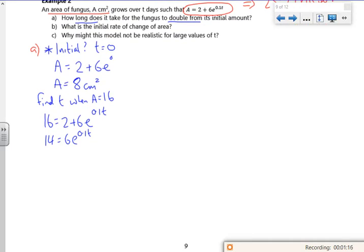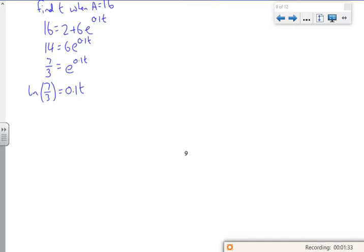I've got 14 over 6, which is 7 over 3, e to the power 0.1t. Take logs of both sides, log of 7 over 3 is 0.1t. Divide by 0.1.